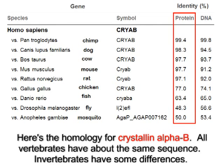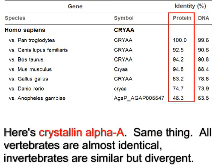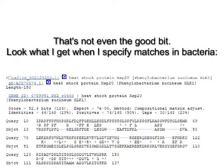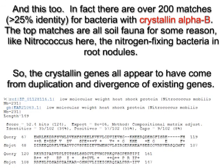Invertebrates have some differences. Here's crystallin alpha-A — same thing. All vertebrates are almost identical. Invertebrates are similar but divergent. That's not even the good bit. Look what I get when I specify matches only in bacteria.